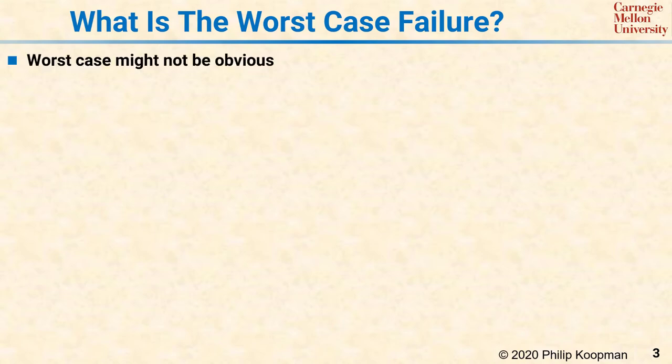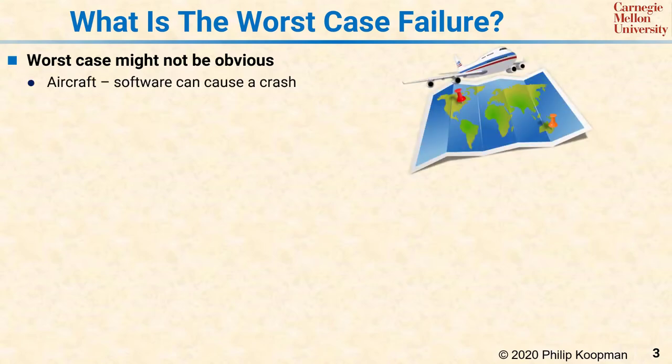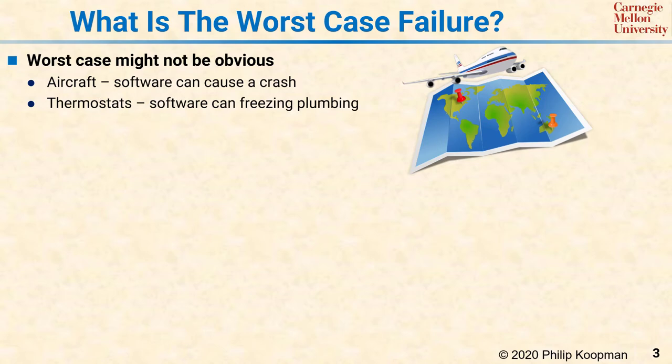The worst case might not be obvious without some thought. For some applications, such as an aircraft, it's pretty clear that if the flight controls don't work, you're going to have an unacceptable loss. But for something like a household thermostat, coming up with a worst case might take some thought. You might think that the worst that can happen is that it gets room temperature wrong and someone has to override it — and to be sure, such failures are annoying, but there are worse things that can happen.